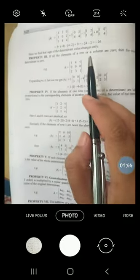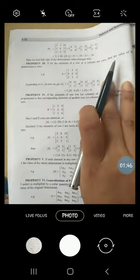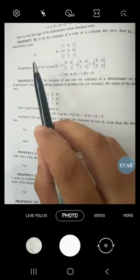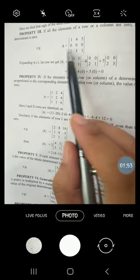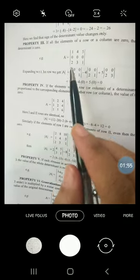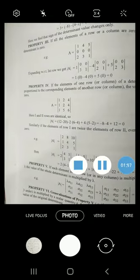Now, let's come to the third. If all the elements of a row or a column are 0, then the value of the determinant is 0. So if in any determinant you find any row or any column in which all the entries are 0, just like this, then value of the determinant will always be 0.